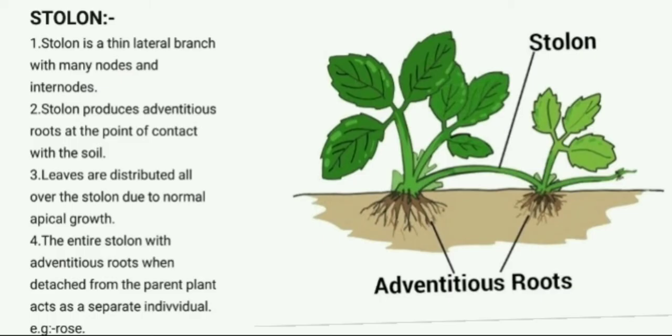Stolon is a thin lateral branch with many nodes and internodes. Stolon produces adventitious roots at the point of contact with soil. For example, if you cut a branch of a rose plant and plant it, after a few days it grows adventitious roots and new growth starts. Leaves are distributed all over the stolon due to normal apical growth. The entire stolon with adventitious roots, when detached from the parent plant, acts as a separate individual.